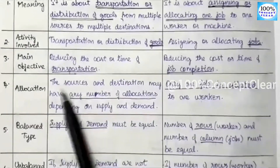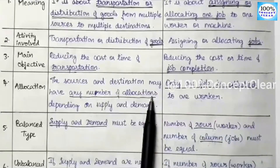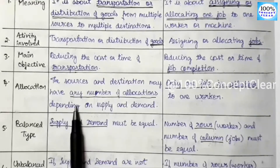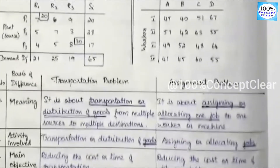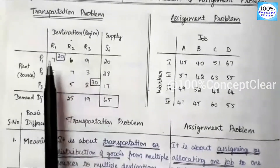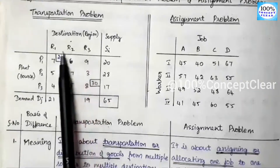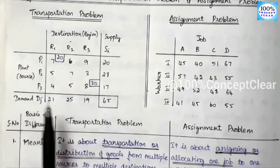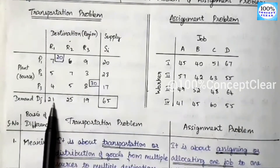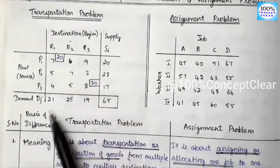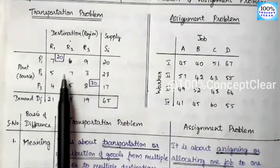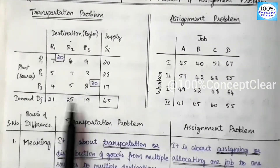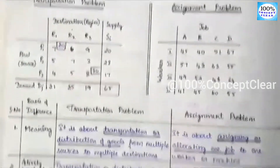Next is the allocation. In the transportation problem, sources and destinations may have any number of allocations, depending on supply and demand. When we produce goods in a source area, we supply the destinations. Each plant may have any supply value and each destination may have any demand value, and we allocate numbers accordingly.